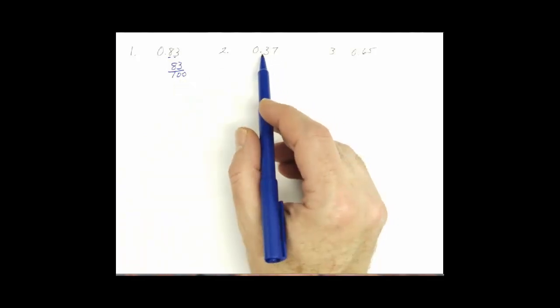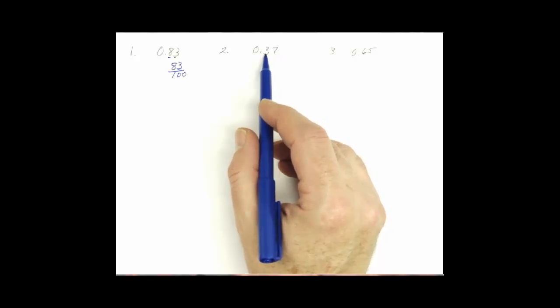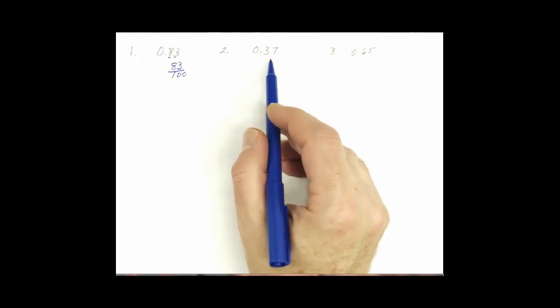Number 2, same principle. We have 0.37. So we would read it as 37 hundredths. And we would write it just the same way.